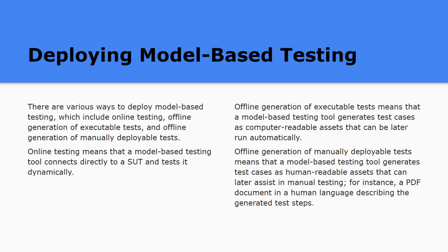Now we know what a model is and what model-based testing is, but how do we deploy model-based testing? There are various ways, which include online testing, offline generation of executable tests, and offline generation of manually deployable tests. Online testing means that a model-based testing tool directly connects to a system under test and tests dynamically. This technique is also known as the on-the-fly technique. Offline generation of executable tests means that a model-based testing tool generates test cases as computer-readable assets that can be later run automatically.